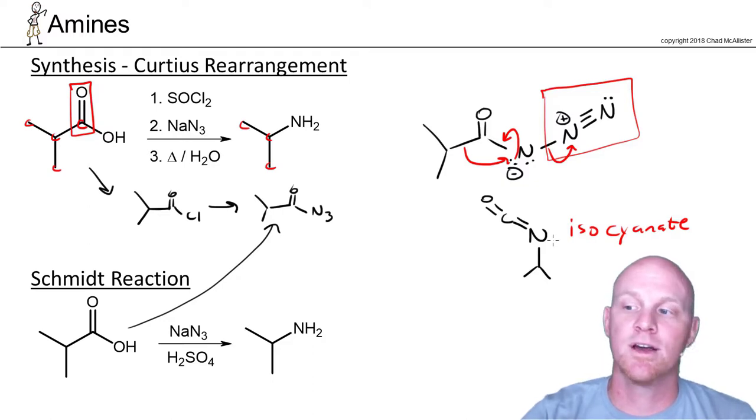And again, just like in the Hoffman rearrangement, those isocyanates are going to lose CO2 and turn into the corresponding amine with one less carbon.